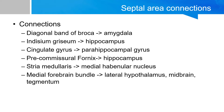The septal area has many connections linking it with the rest of the limbic system. The diagonal band of Broca links the septal area with the amygdaloid region. The indusium griseum links the septal area with the hippocampus. The cingulate gyrus is in direct continuity with the parahippocampal gyrus, which feeds into the hippocampus. The pre-commissural fornix links the septal area with the hippocampus, covered in the hippocampus video. The stria medullaris links the septal area with the medial habenular nucleus, covered in the habenulum video. The medial forebrain bundle links the septal area with the lateral hypothalamus and brainstem, covered in the hypothalamus video.